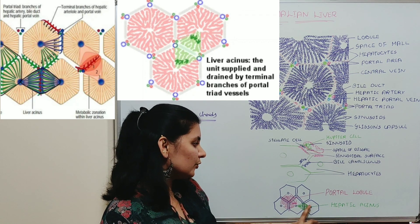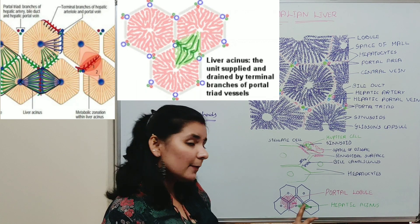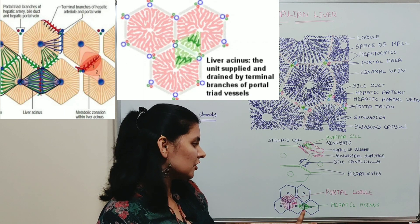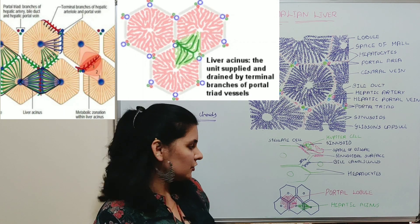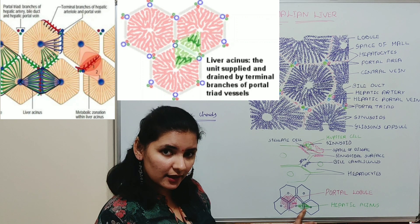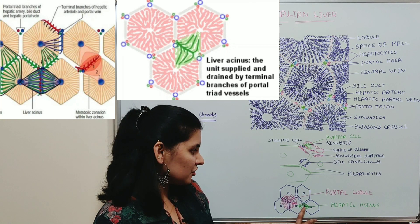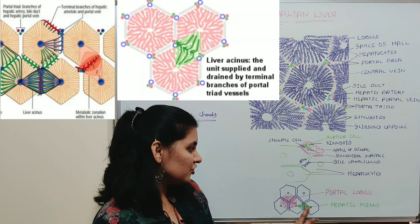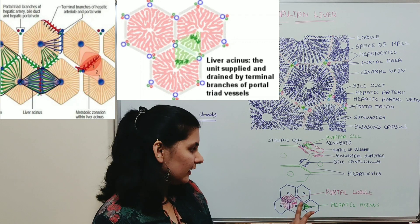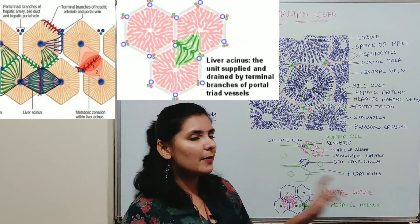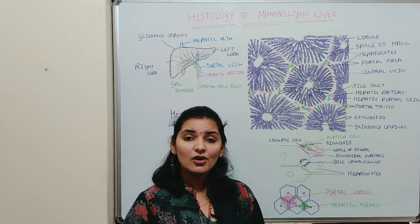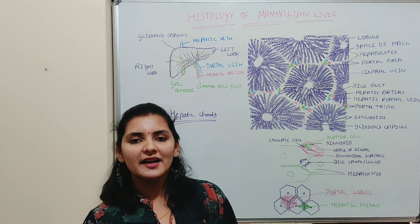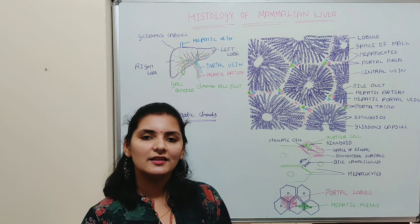One more unit is the hepatic acinus. The hepatic acinus is the area of the liver lobule supplied by the hepatic arteriole, which runs along the junction of two lobules. The hepatic arteriole is present at the junction of two hepatic lobules and sends branches into these two lobules — that area is known as the hepatic acinus. That covers the different types of cells and structures present in the liver.